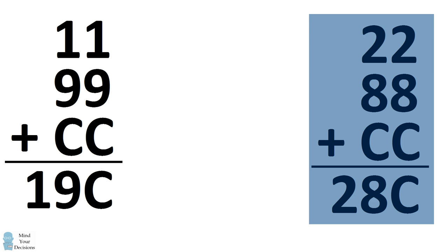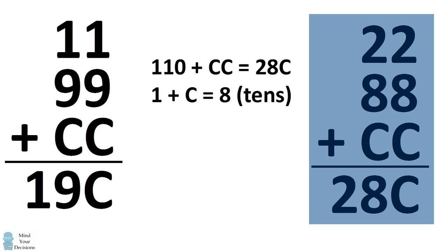We'll first focus on 22 plus 88. 22 plus 88 is 110. We add CC and we end up with the result of 28C. Since 110 has a 0 in the Units place, anything we add with C will give us the result of C. So we'll instead focus on the tens place. We must have 1 plus C is equal to 8. We can solve this equation that C is equal to 7.